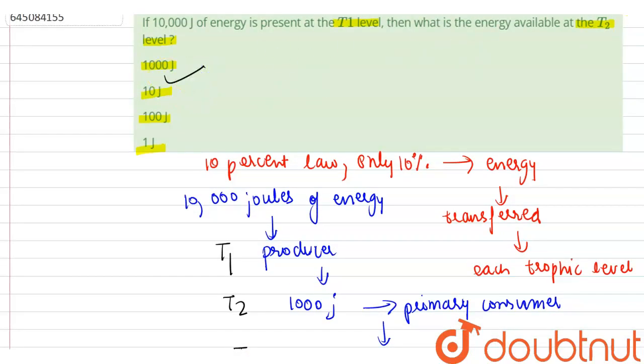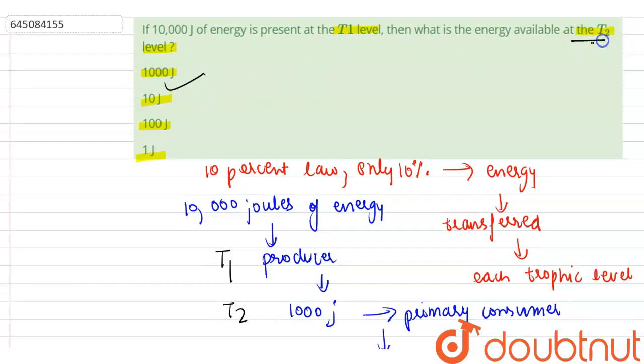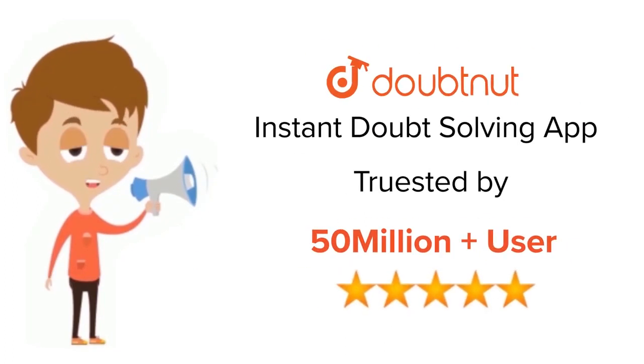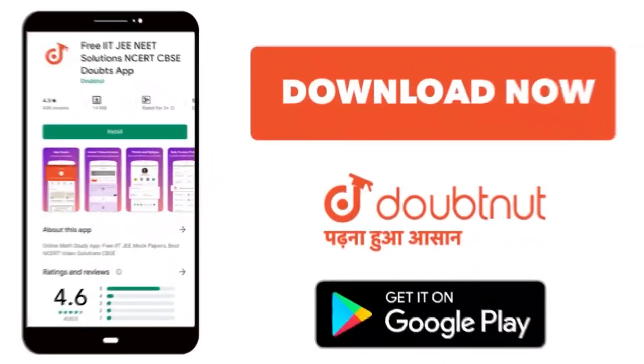1000 joules of energy to the primary consumers which are at the second trophic level. So the correct option here is 1000 joules. Thank you. For class 6 to 12, IIT JEE and NEET level, trusted by more than 5 crore students, download Doubtnut app today.